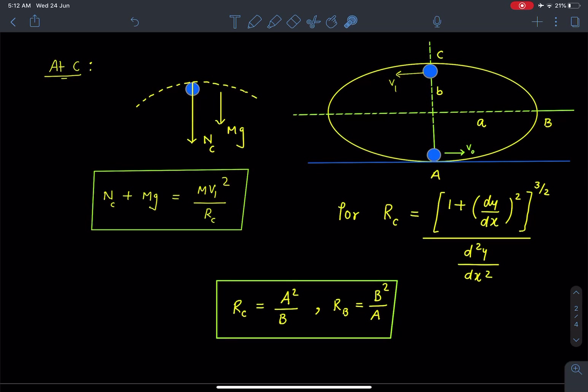Where Rᴄ is the radius of curvature of ellipse at the topmost point, which can be calculated by using the equation of ellipse. And this equation is given as Rᴄ = [1 + (dy/dx)²]^(3/2) divided by d²y/dx².